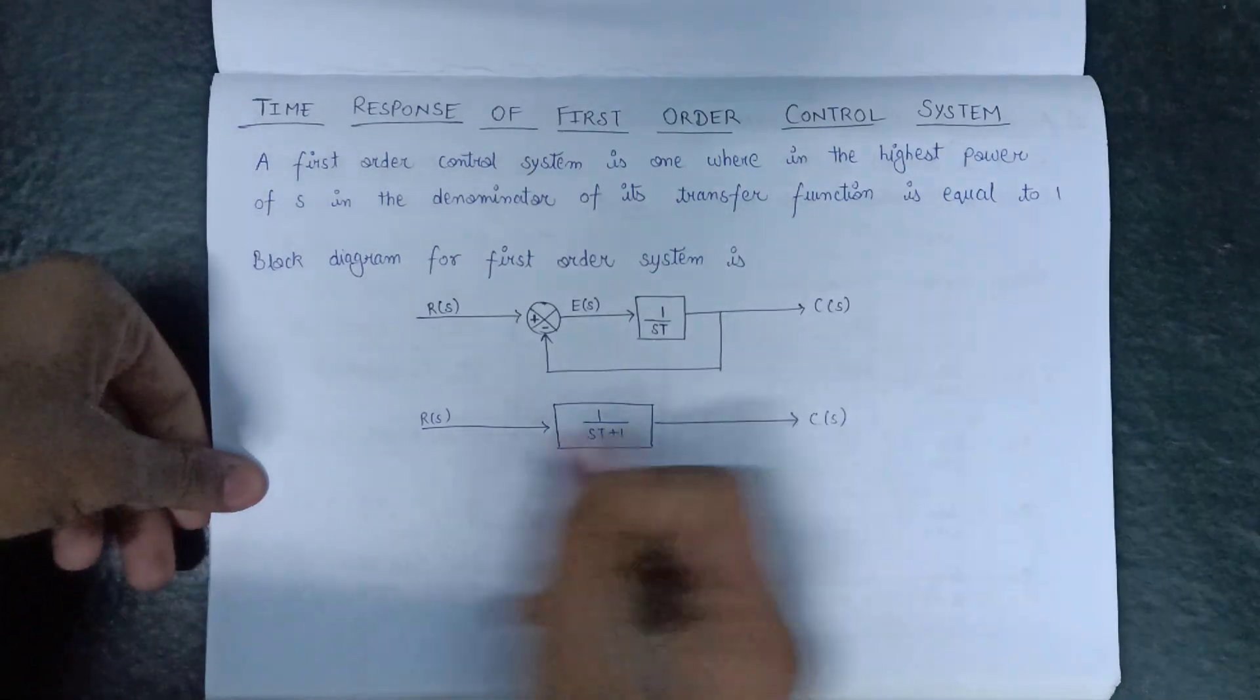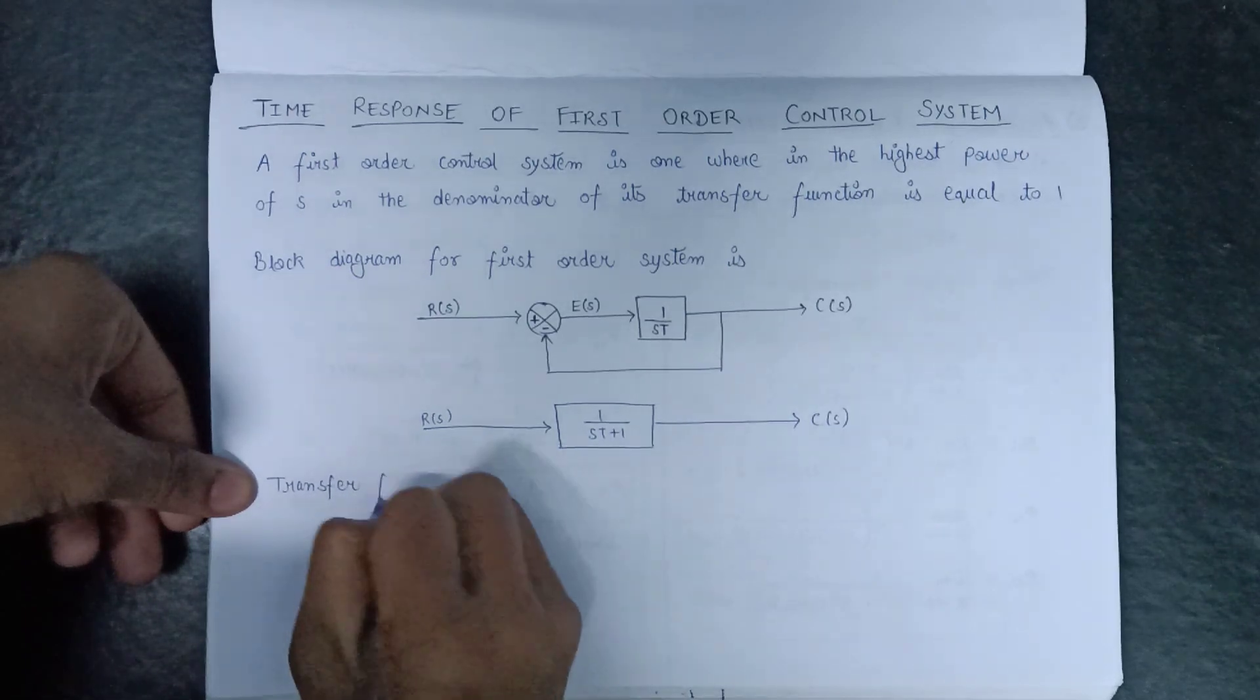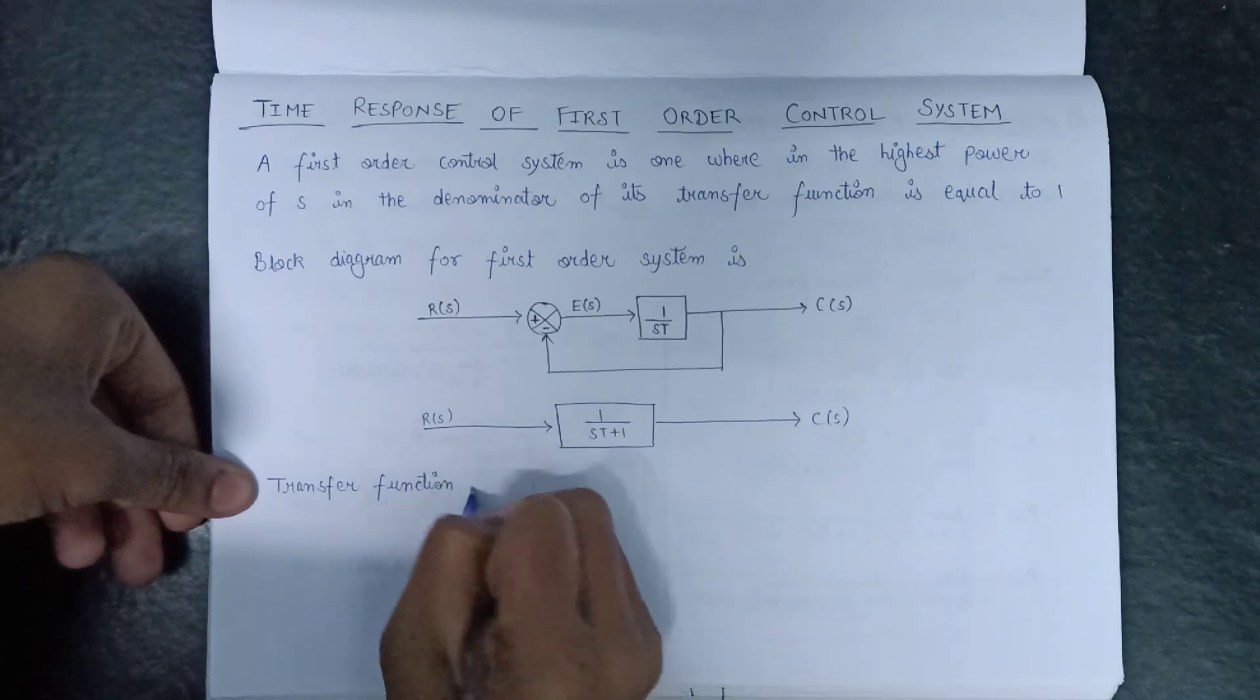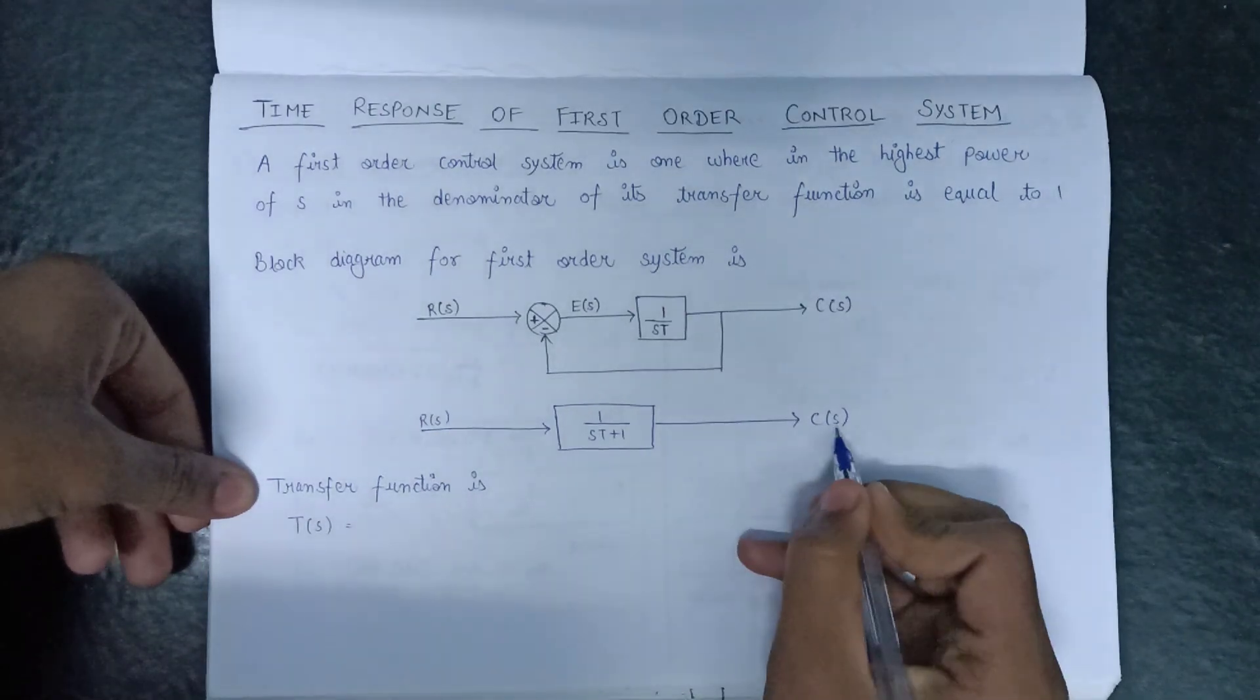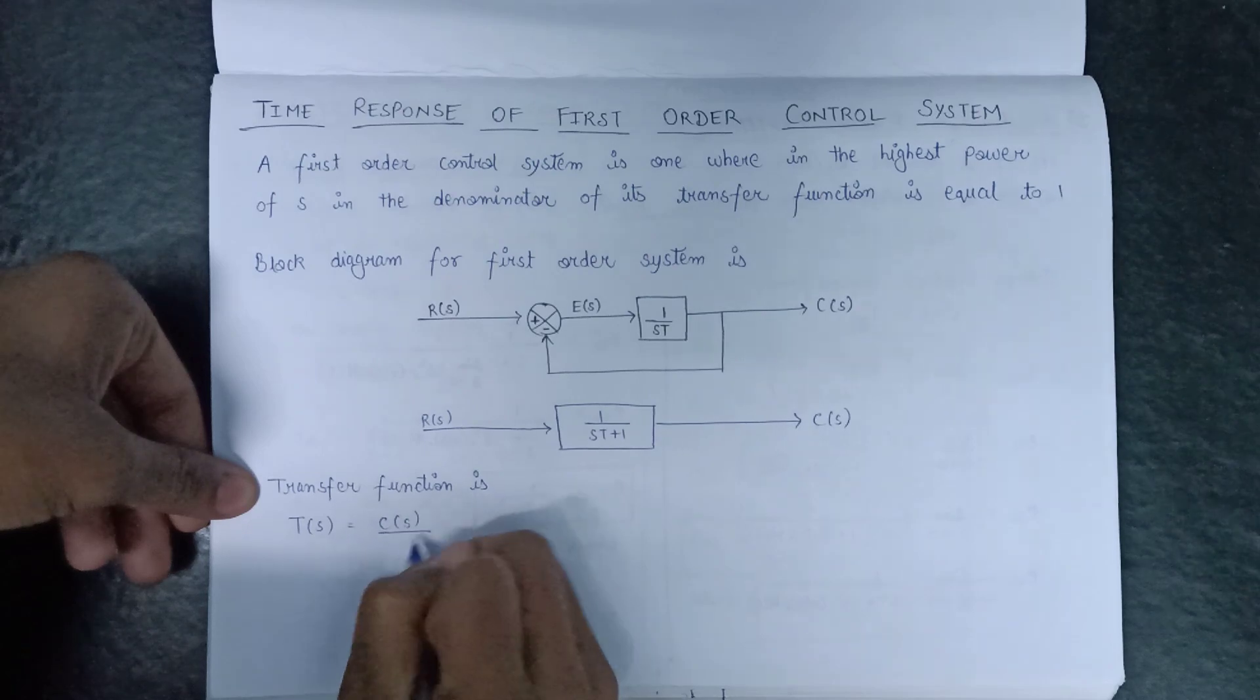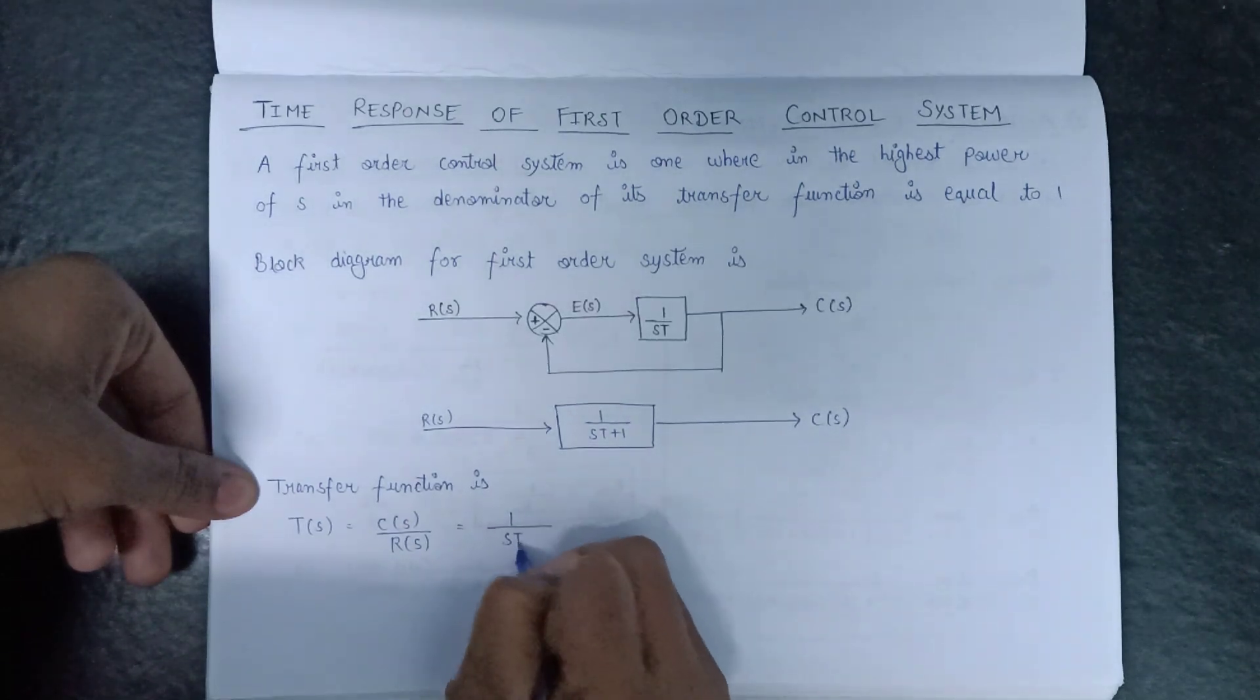The transfer function will be given as T(s) which is always equivalent to C(s) over R(s), that is equals to 1 over st plus 1.